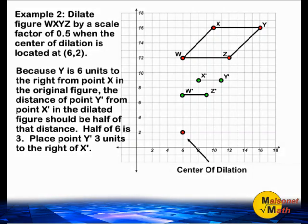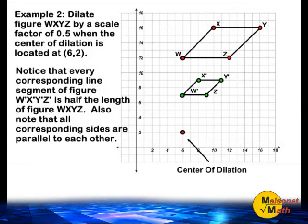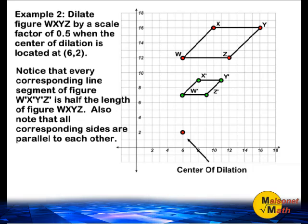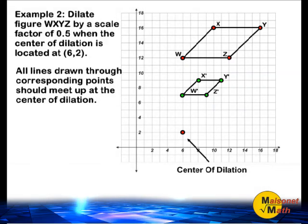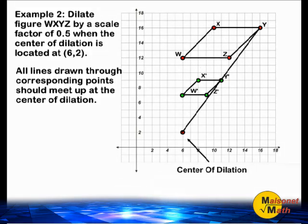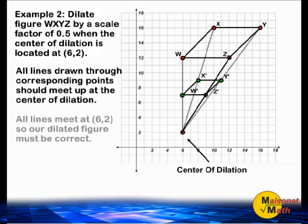Now that we have located all 4 of our dilated points, simply connect those vertices together. Notice that every corresponding line segment of our dilated figure is exactly half the length of our original figure. You should also note that all corresponding sides are parallel to each other. When dilating an object on the coordinate plane, any line segment of the new object will be parallel to its original line segment. Remember that all lines drawn through corresponding points should meet up at the center of dilation, and after drawing lines through all corresponding points, we can confirm that all lines do meet at the center of dilation.